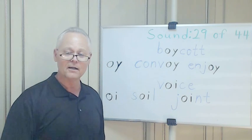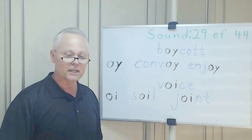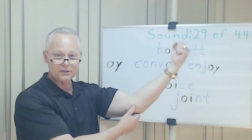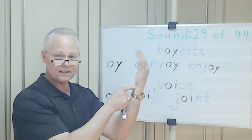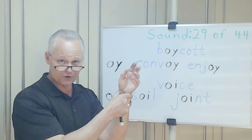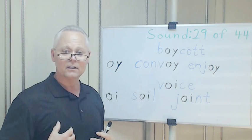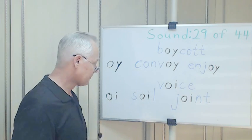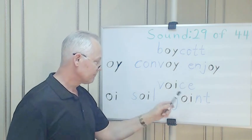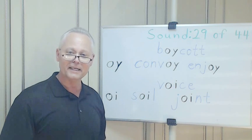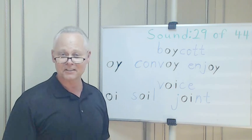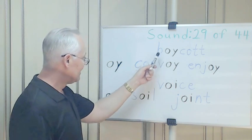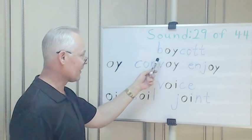Joint. There are many different things that 'joint' can mean. For example, my elbow is a joint, my wrist is a joint — joints are where your bones come together. That's a joint. It has some other meanings too, but let's go with that one for now.